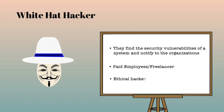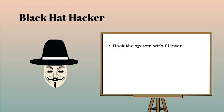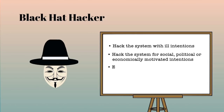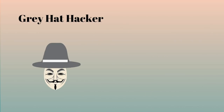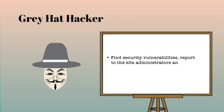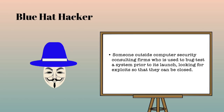Black hat hackers, in contrast, hack systems with ill intentions for social, political, or economic motives. They find security loopholes and exploit the system for personal or organizational benefit until the organization applies security patches. They are popularly known as crackers. Gray hat hackers find security vulnerabilities and report to site administrators, offering a fix for a consultancy fee. Blue hat hackers are outside computer security consulting firms used to bug-test a system prior to its launch, looking for exploits so they can be closed.